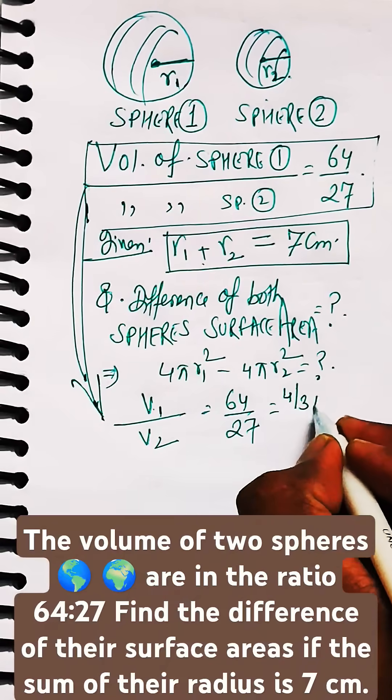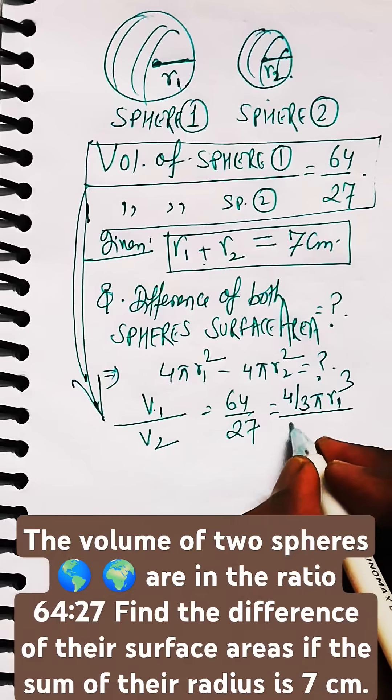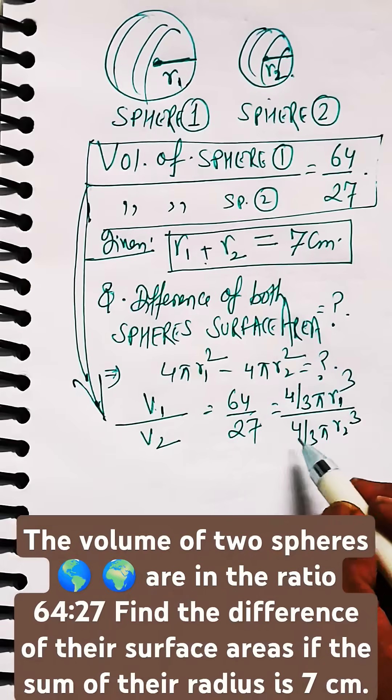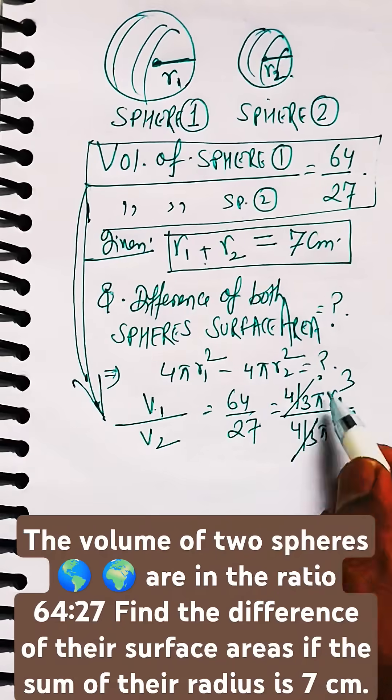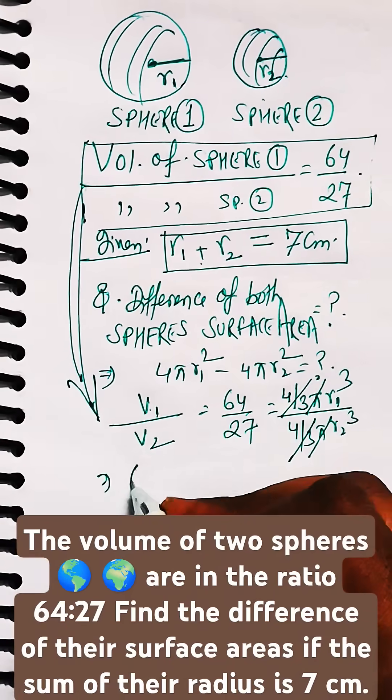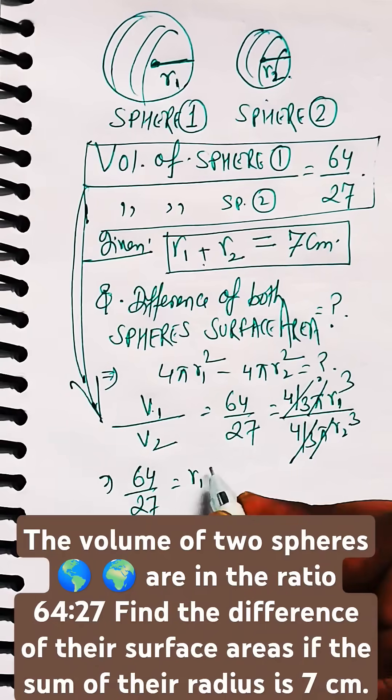We know the volume of a sphere is 4/3 πr³. So for volume 1 it's 4/3 πr1³ and for volume 2, the volume of the second sphere, is 4/3 πr2³. So 4/3 π will be cancelled out.